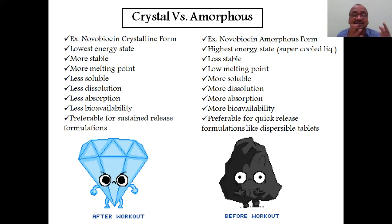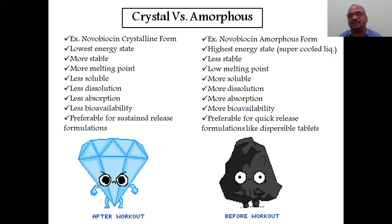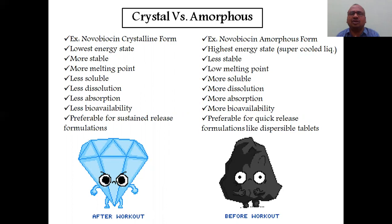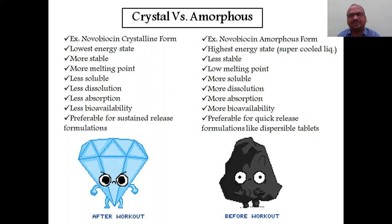Less dissolution leads to less absorption and therefore less bioavailability. The crystalline form is preferable for sustained-release formulations because of its lower solubility. You can use novobiocin crystalline form for sustained-release tablets.